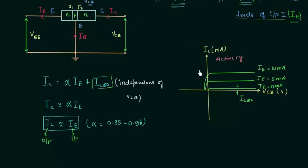This region is called the saturation region, and the region below IE equal to 0 mA is called the cutoff region.